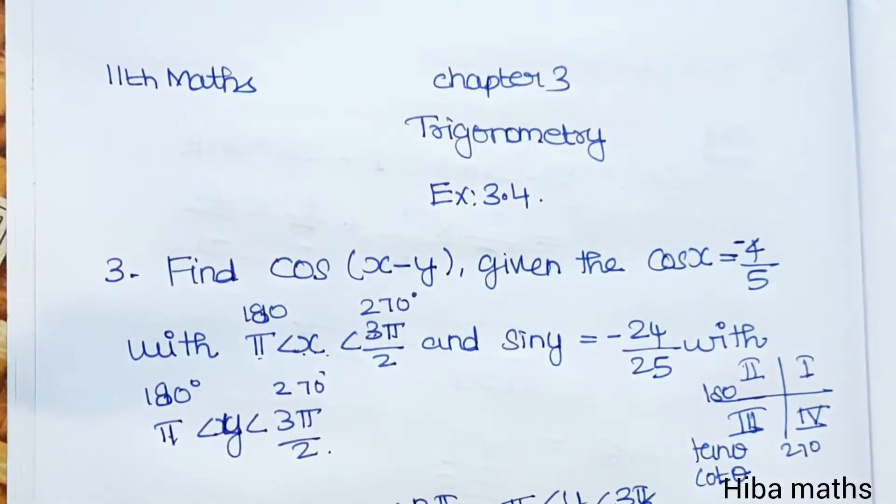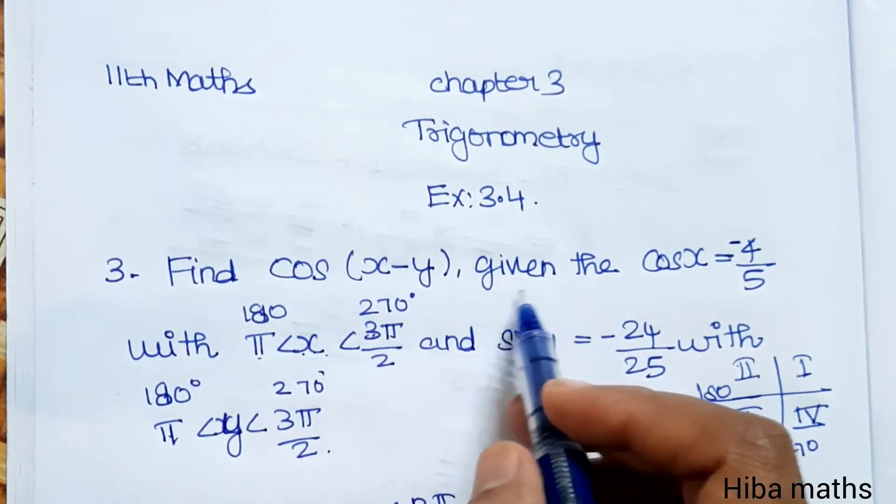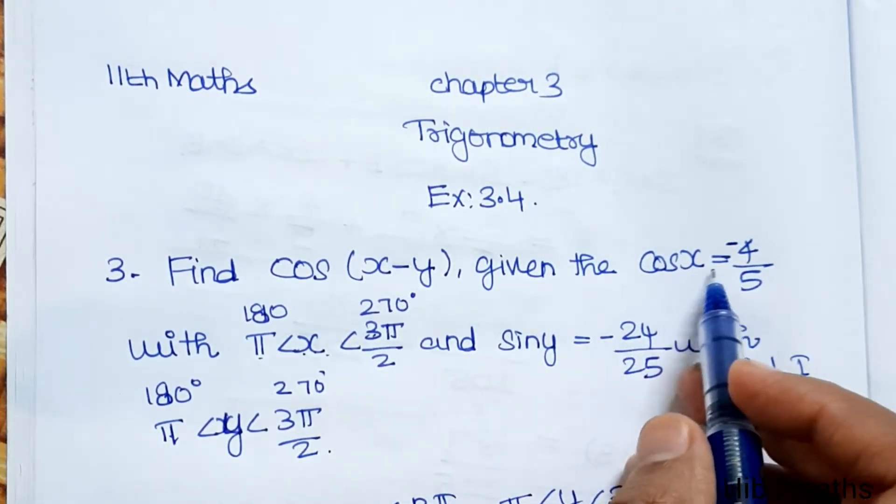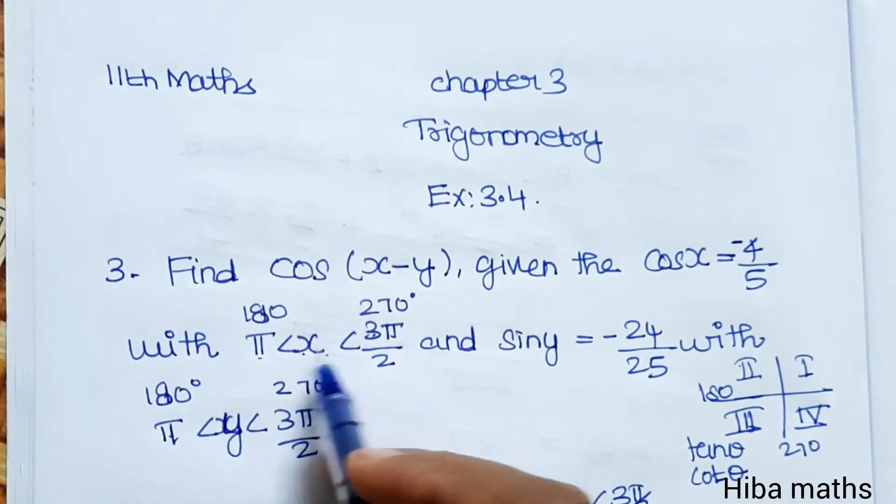Hello students, welcome to Hiba Maths, 11th standard maths chapter 3 trigonometry, exercise 3.4, third question. Find cos(x-y) given that cos x equals minus 4 by 5 with x is greater than π and less than 3π by 2.